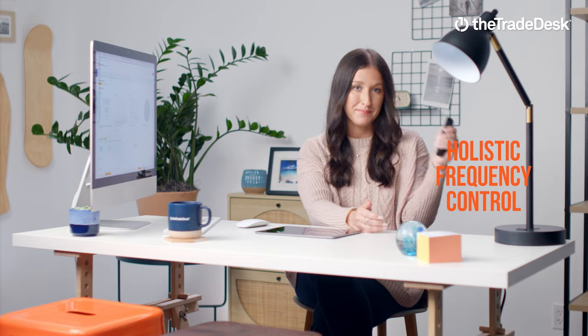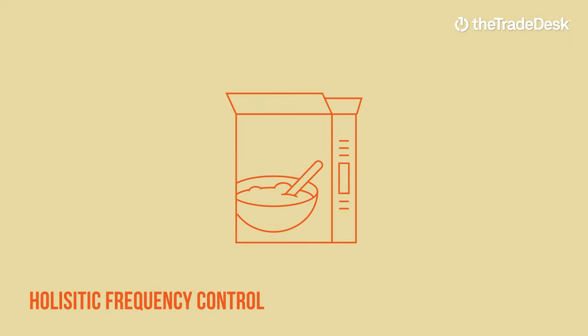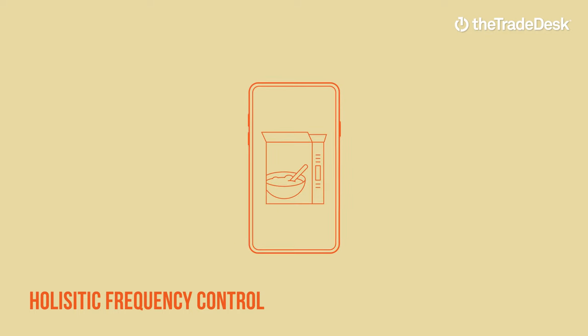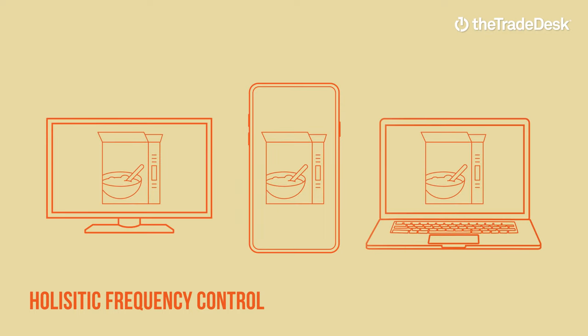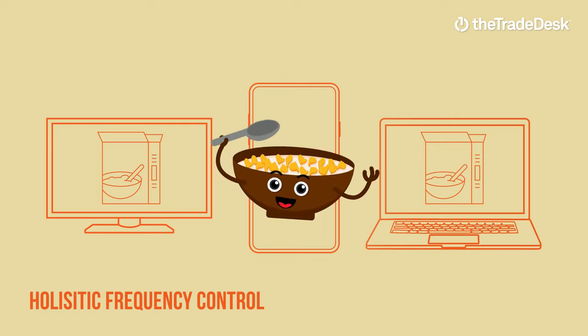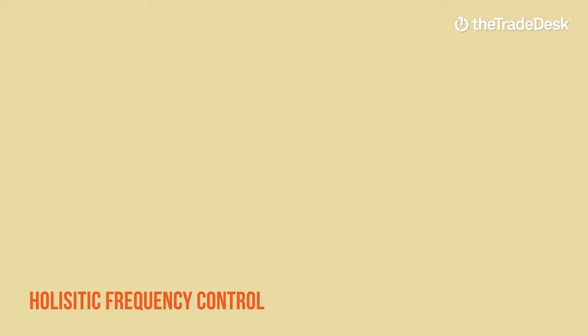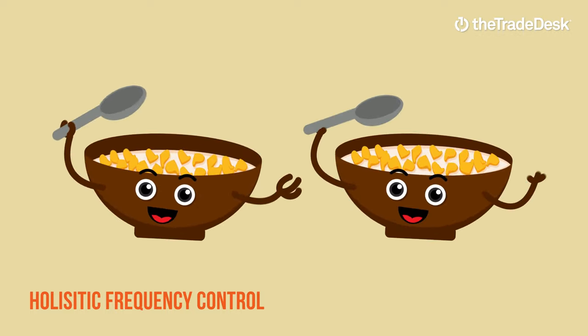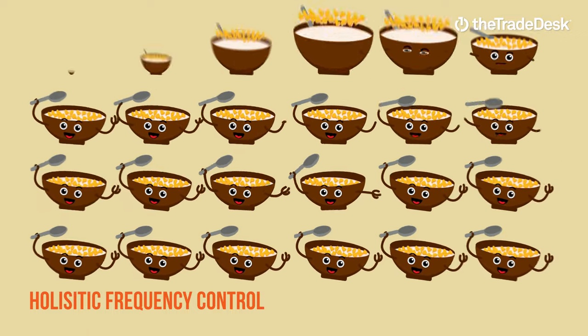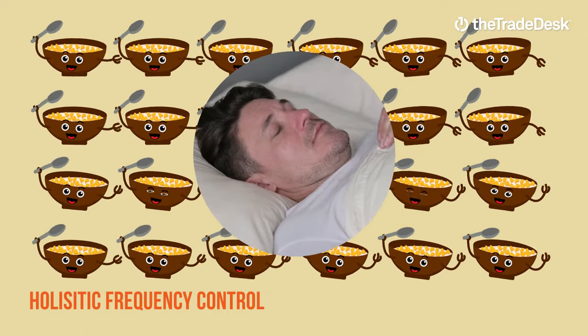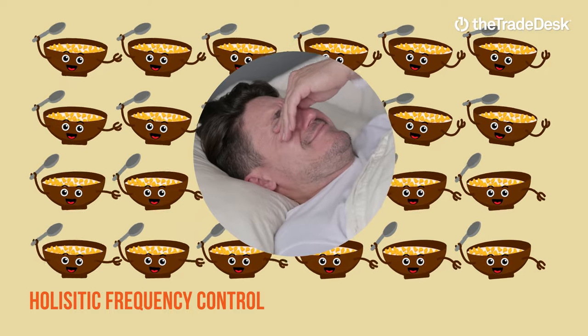The second big limitation of both the direct buying and programmatic guaranteed models is the lack of holistic frequency control. Imagine that you're a cereal brand — your breakfast-loving audience watches content on many different platforms and devices. But because of fragmentation and lack of visibility across publishers, you're never quite sure how often they're seeing your new cartoon spokesperson. They might see it once, twice, or they might see it so many times that the mere thought of hearing your jingle again keeps them up at night.